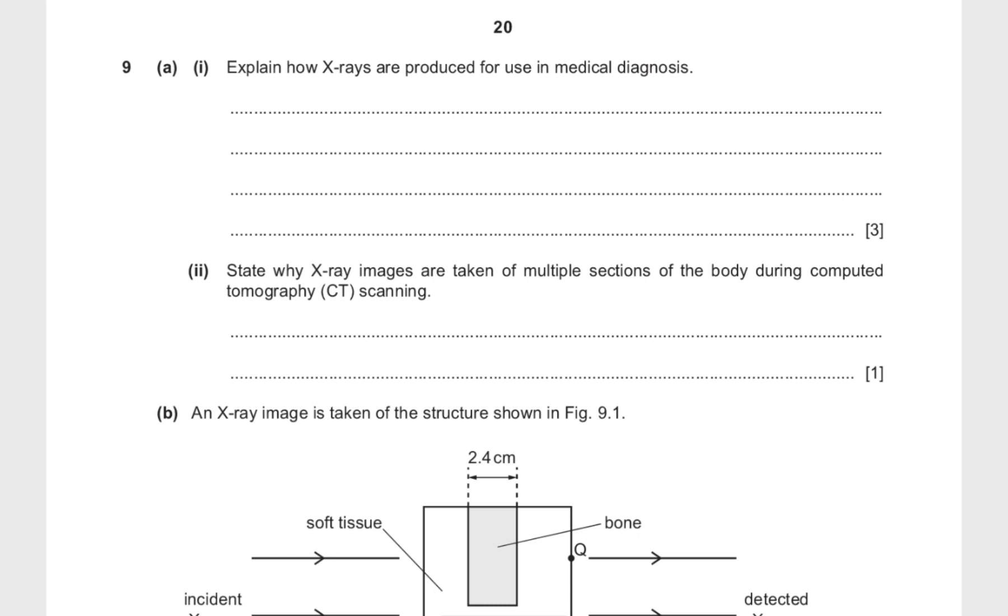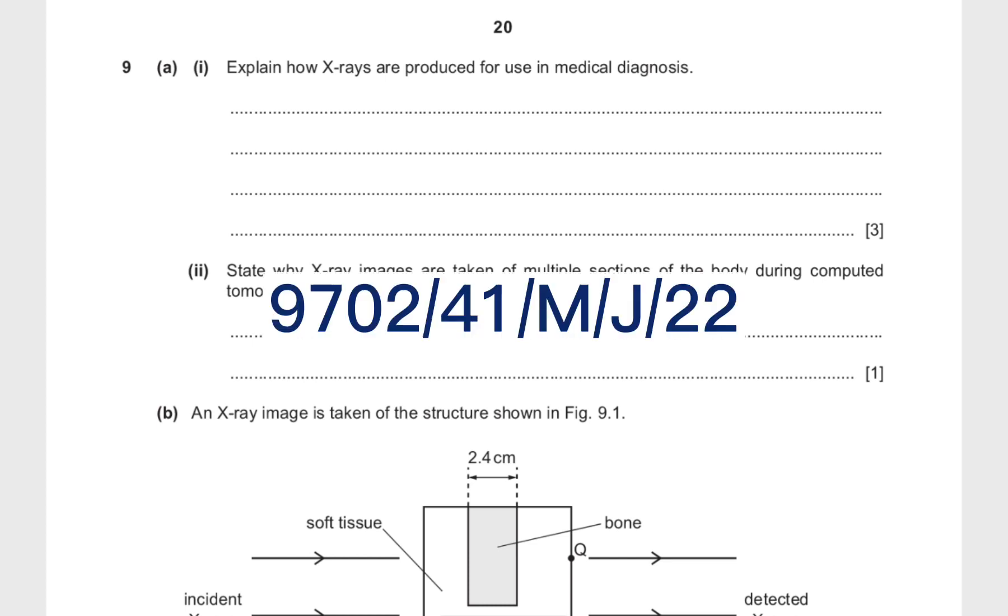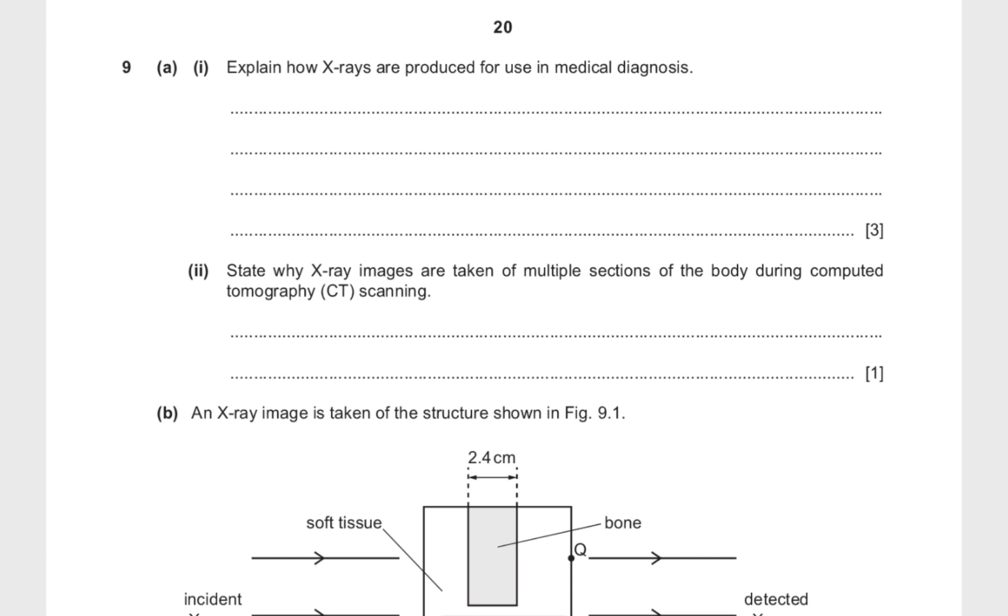So let's start with this question. This is from the May-June 22 paper, paper 4-1, and I think it's a very typical x-ray question. This is exactly the stuff that they're going to ask you. So let's start with 9A1 that we see over here. They ask us to explain how x-rays are produced for use in medical diagnosis, and the keyword here is produced.